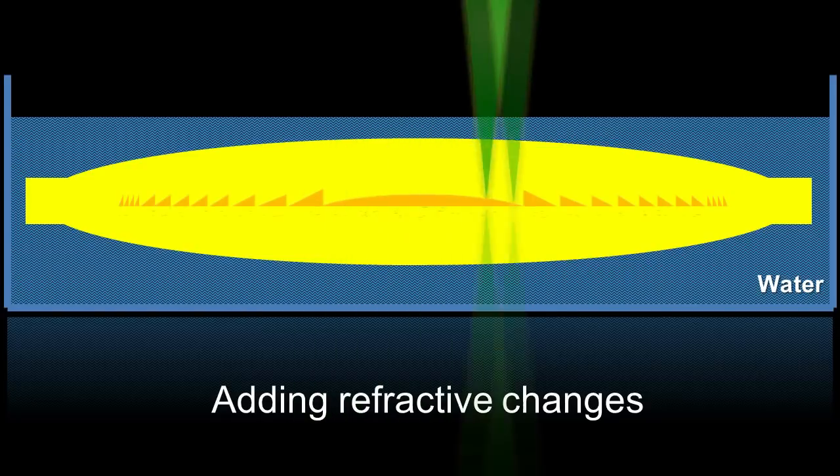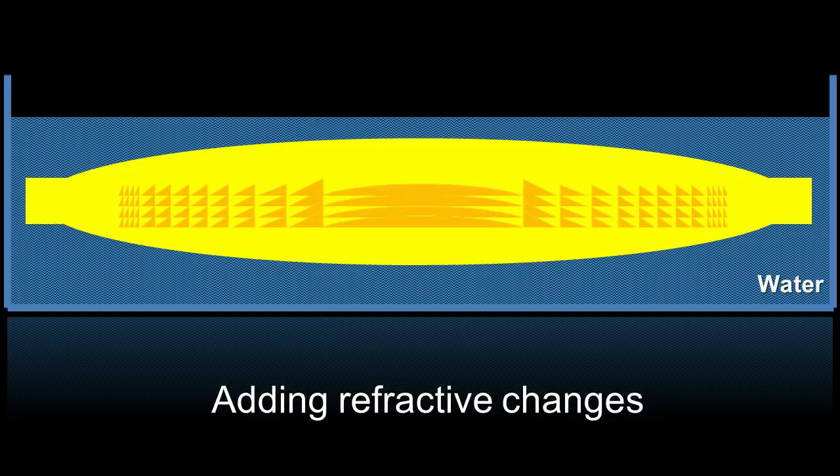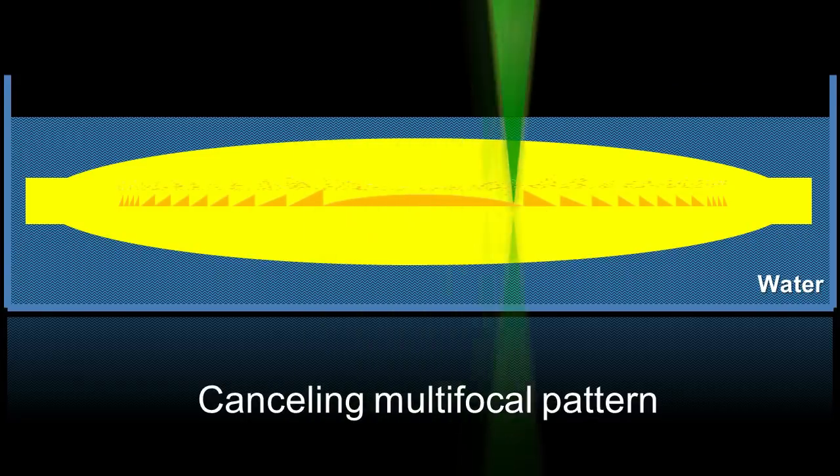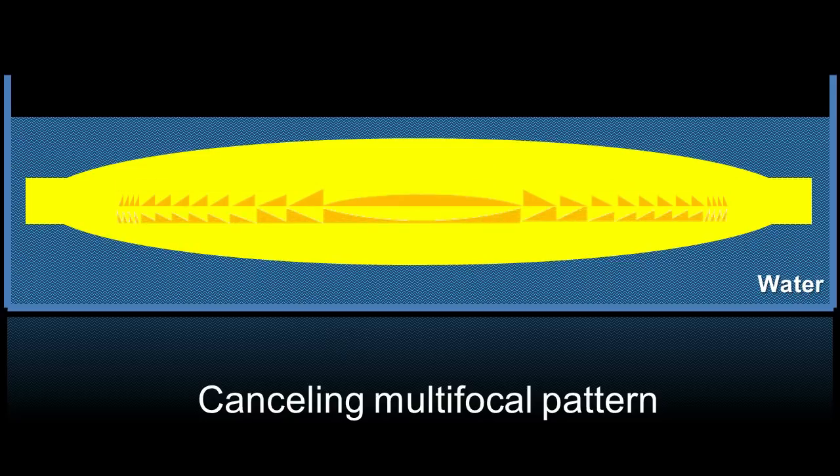Further changes to the lens power can be made by treating areas above or below the first treated area. If multifocality is applied, it can be cancelled using a treatment with characteristics opposing the multifocal pattern. This can be done in an area above, below, or within the first treated area.